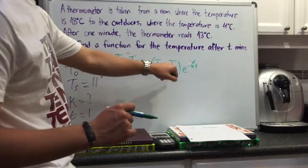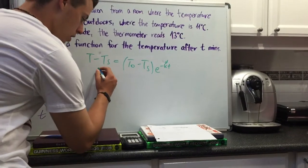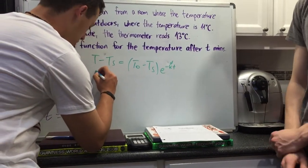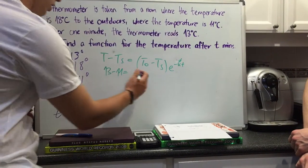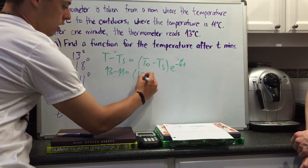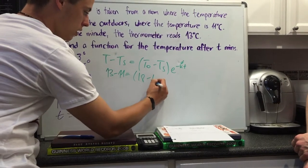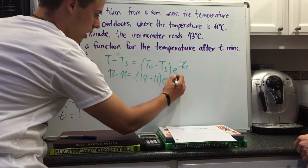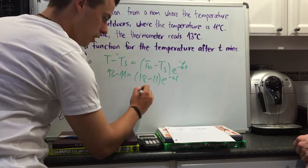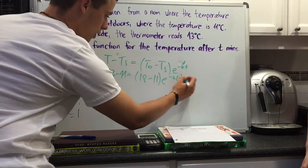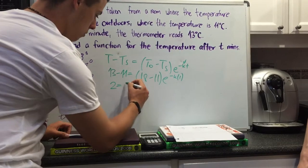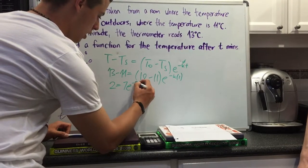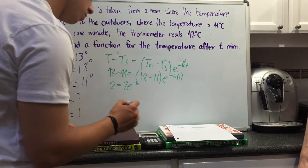So we have all the variables here except for K and we're going to sub it in. We get 13 minus 11 equals T naught is 18, 18 minus 11, e to the negative K, and T is 1 minute. So that just goes away because it's 1. 13 minus 11 is 2, equals 7, e to the negative K.